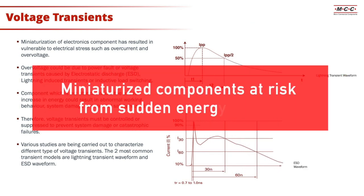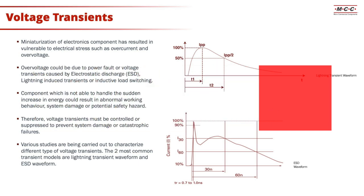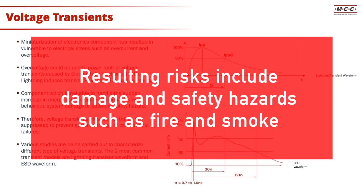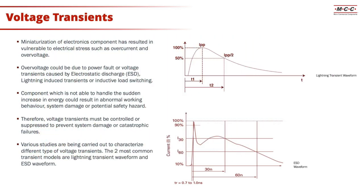Because of the miniaturization of electronics components, components may not be able to handle the sudden increase in energy, resulting in abnormal working. This can damage your systems or even create potential safety hazards such as fire or smoke hazards. Therefore, we need to suppress these transients to prevent system damage or catastrophic failures.